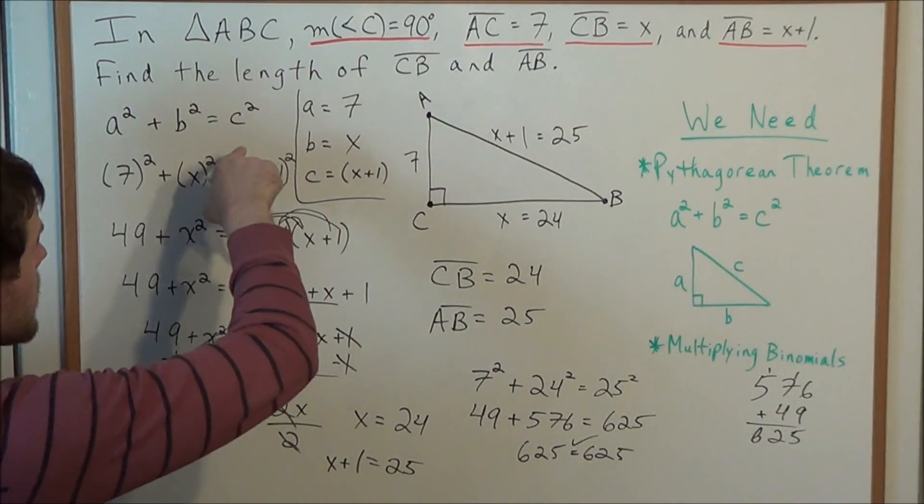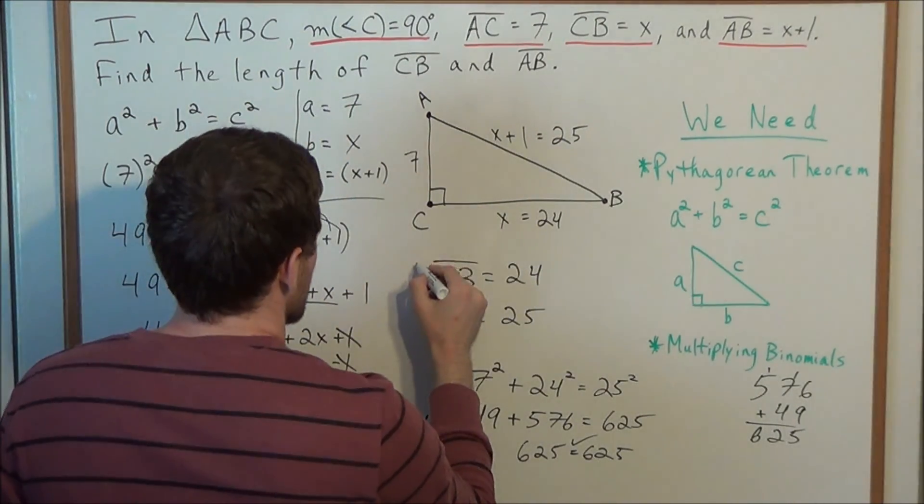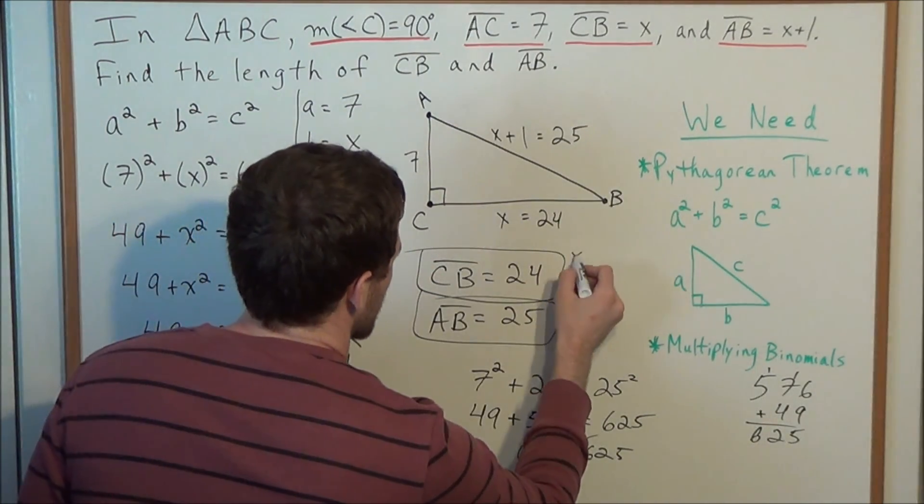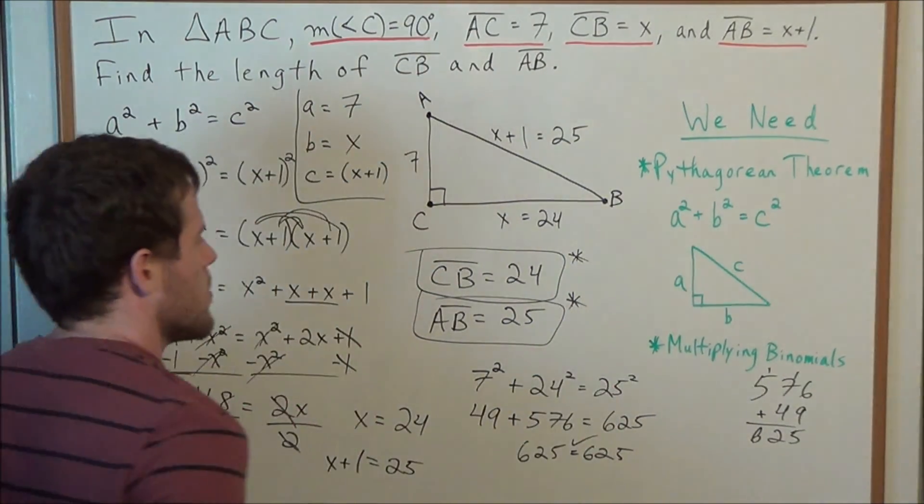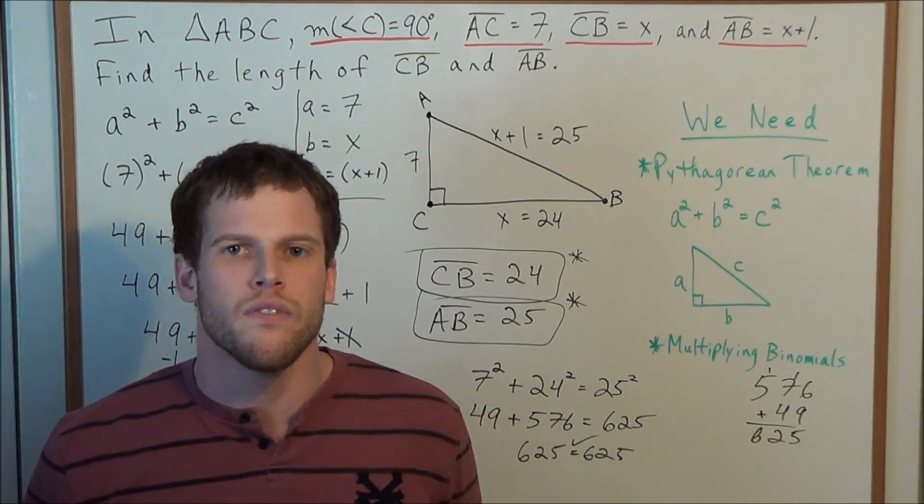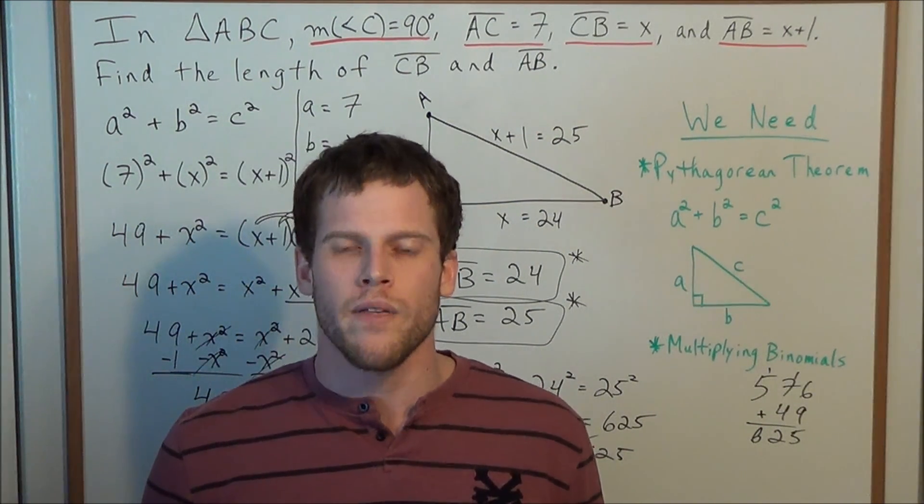So our answer to this problem, the length of CB equals 24, and the length of AB equals 25. Okay, well this is going to conclude this Pythagorean theorem problem, as well as this video. Thank you all for watching, and I hope that it was helpful.